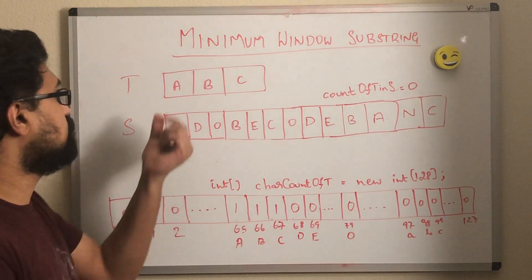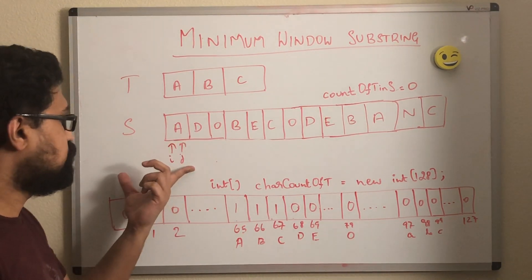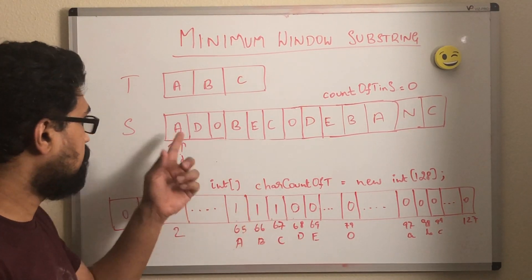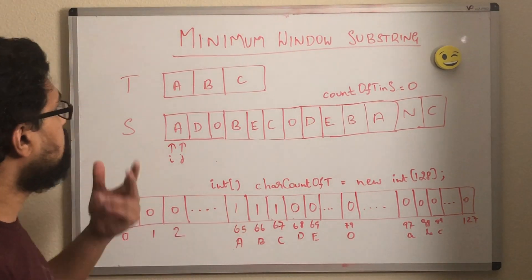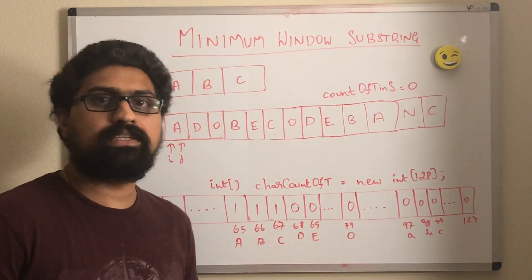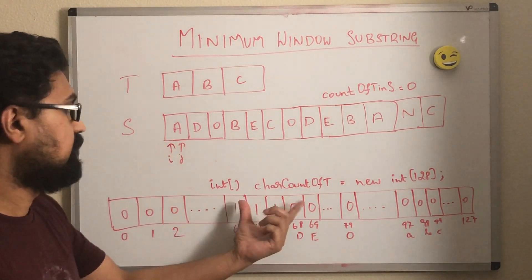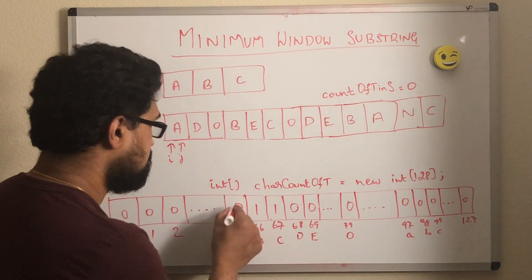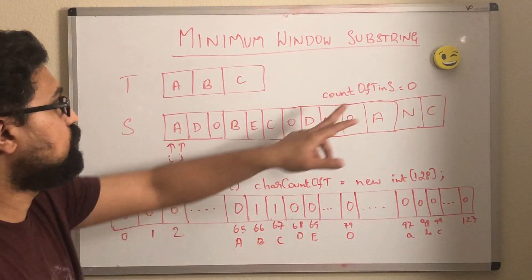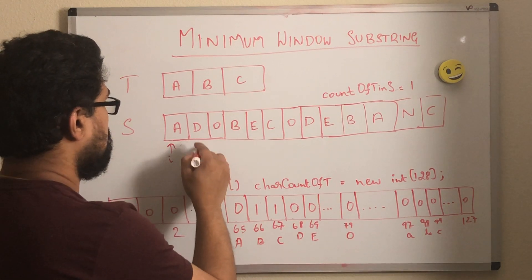Now how do we know if a character in s is also seen in t? For that, we will use this character count array. We will take the character pointed by index j and decrement its value by 1. If the value in this character count array for that particular character is greater than or equal to 0, that means it is a character that is seen in t. If it is less than 0, that means it is a character not seen in t. Now, index j is pointing to character a. So let's decrement the count of that character in this array. The value is now greater than or equal to 0, meaning this is a character seen in t. So let's update the count of t by 1.